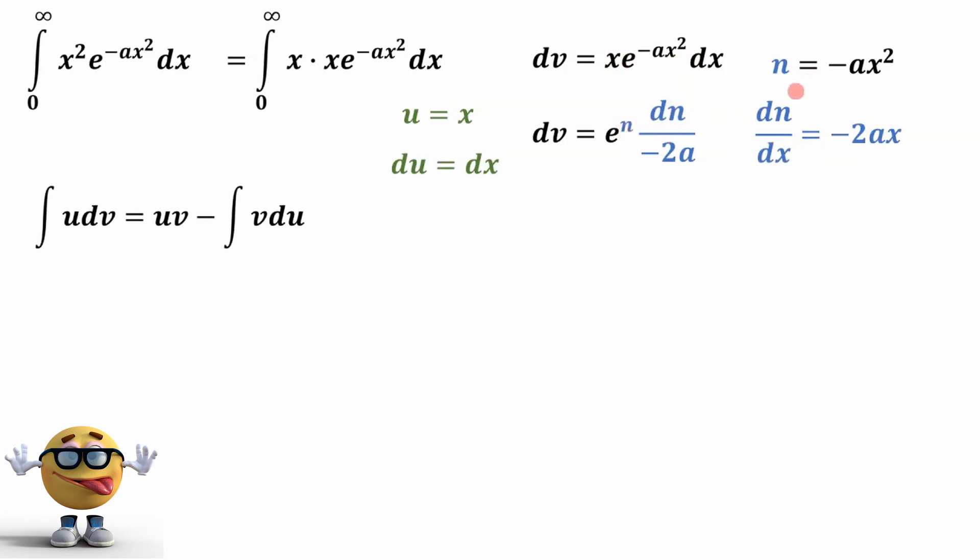And then we'll substitute in what n is. So n is negative ax squared. We'll put n in there and replace that. At this point, we can integrate both sides. So if we integrate this left-hand side, we get v. The integral of e to the n is literally just e to the n. The negative 2a just comes along for the ride. The negative we just put in the numerator. But we don't care about n, we care about x. So we're going to substitute back. So n is negative ax squared. And from here, we now have our v.